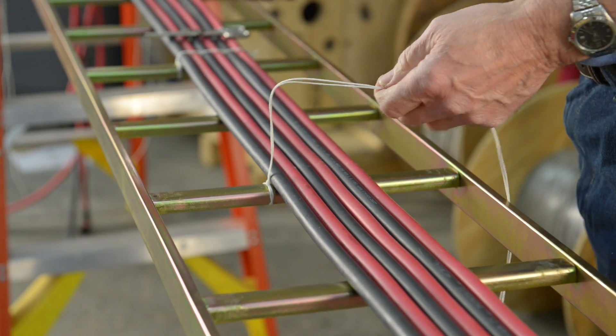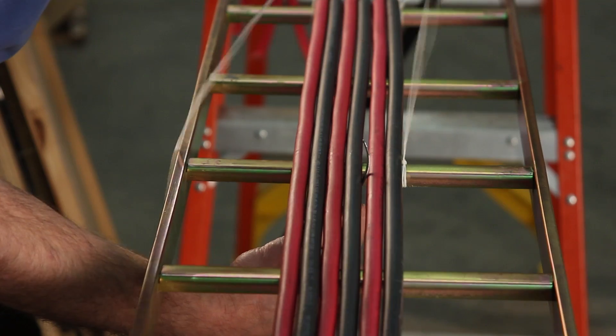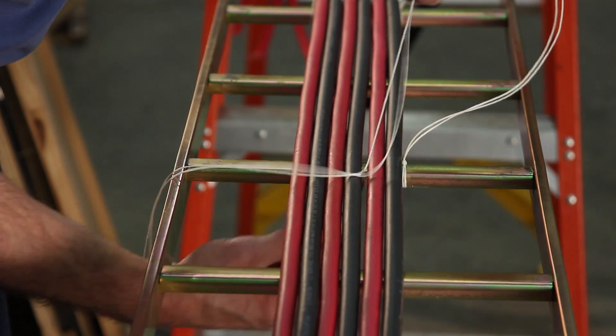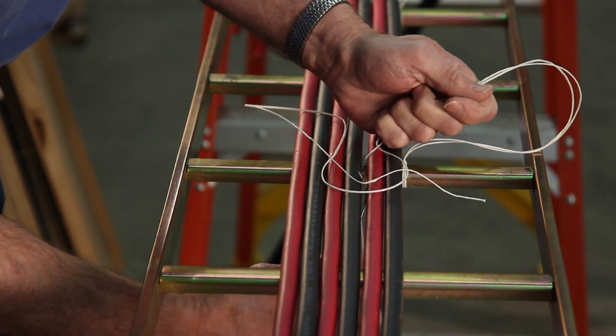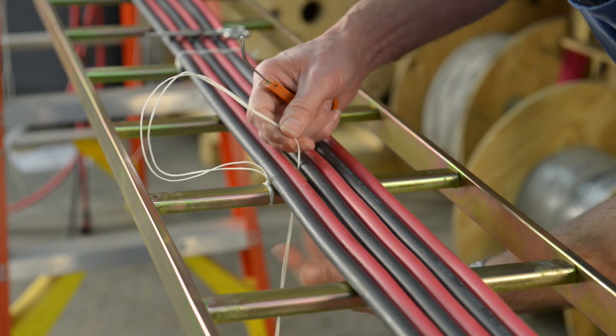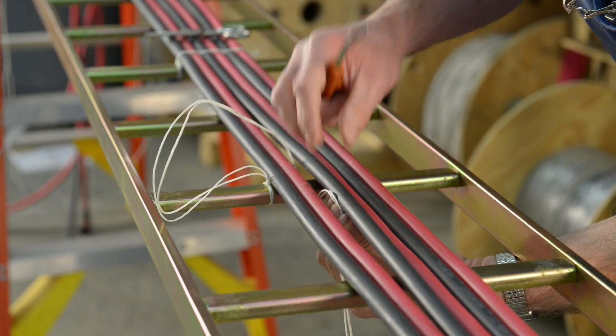Then you're going to go over two wires, you're going to hook it, pull it down, under the rung, and then come back up on the other side.